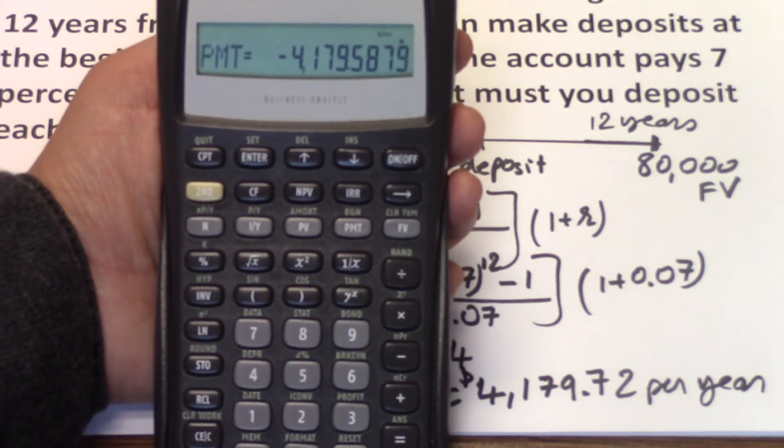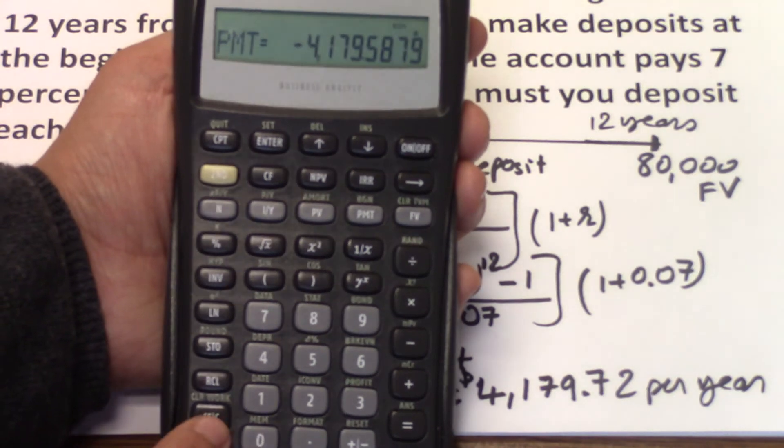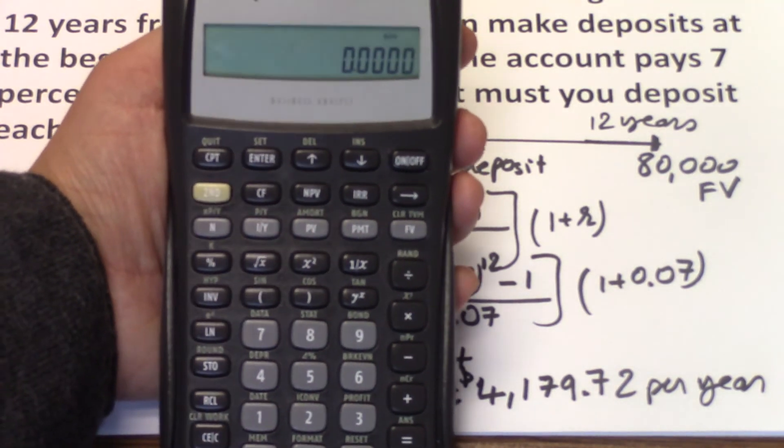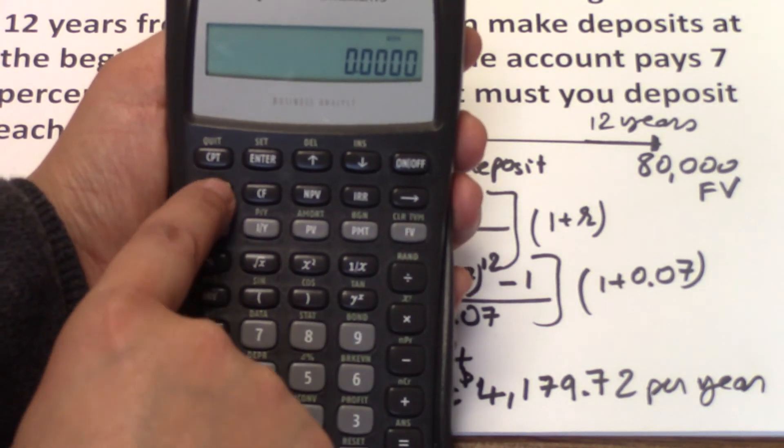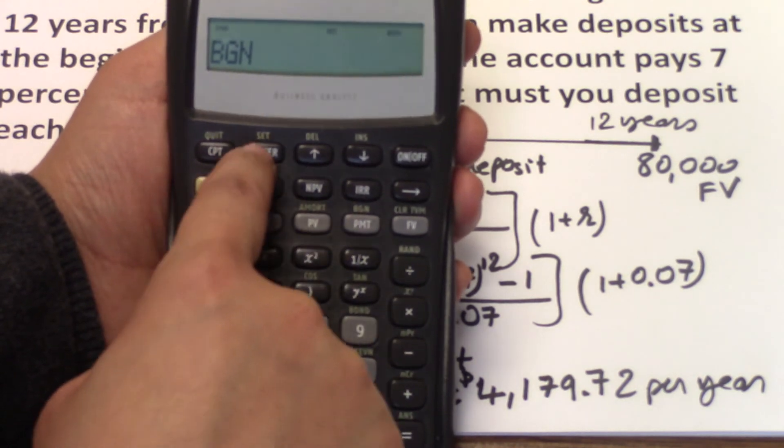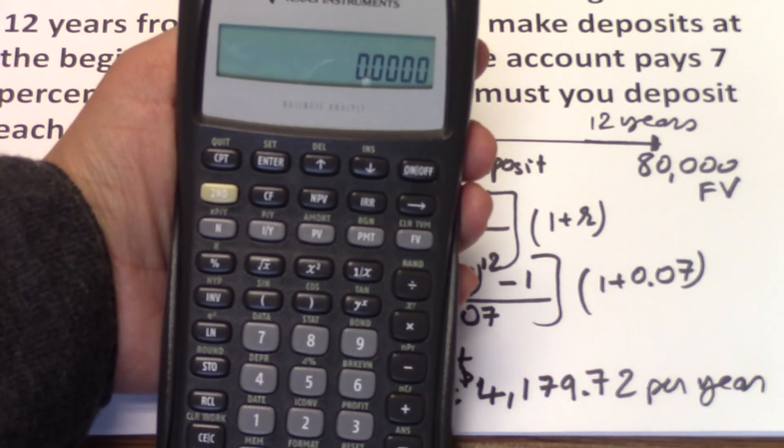To make sure that you set the calculator to the default, you can do second PMT, second enter, and then you should see that BGN disappearing.